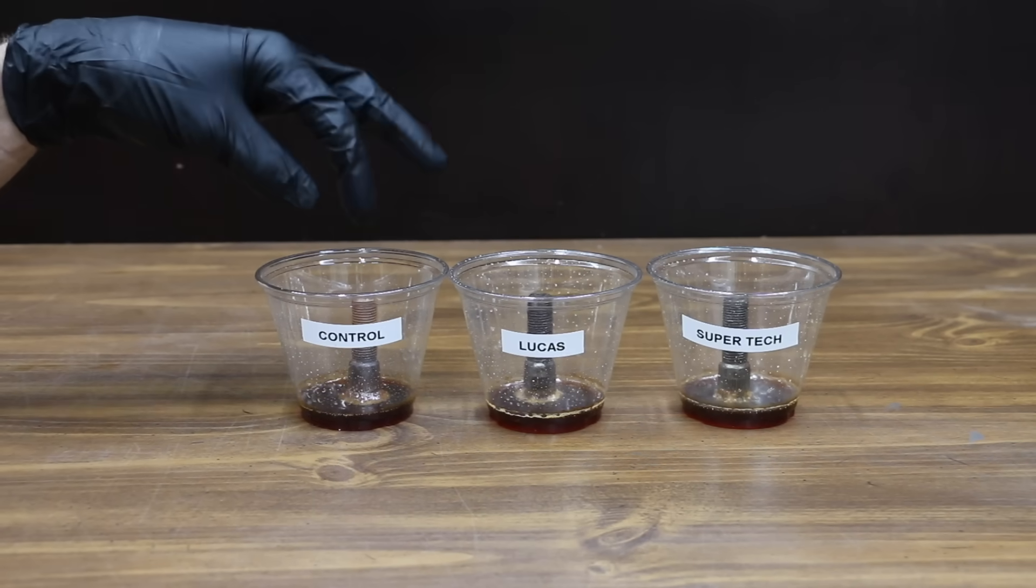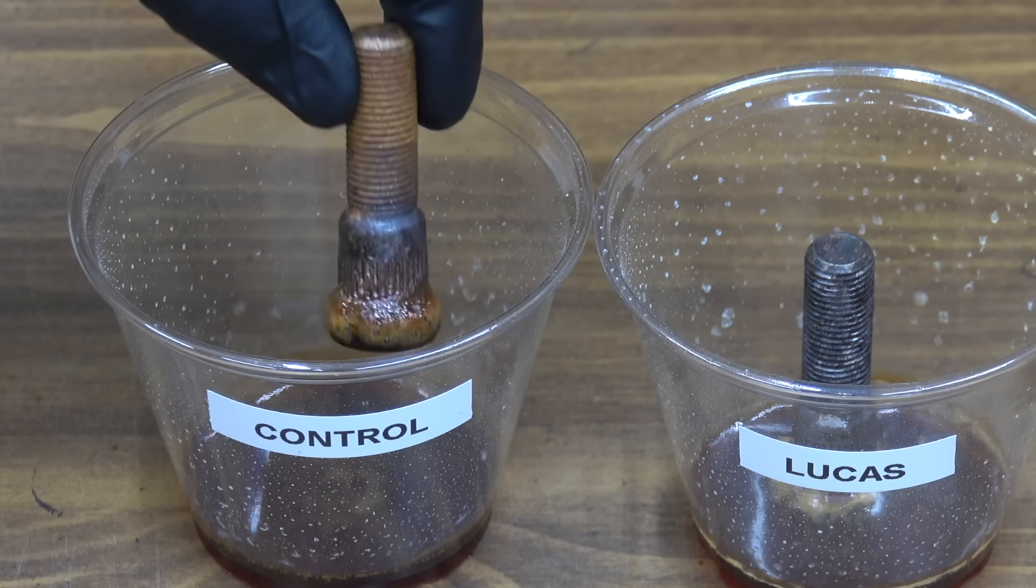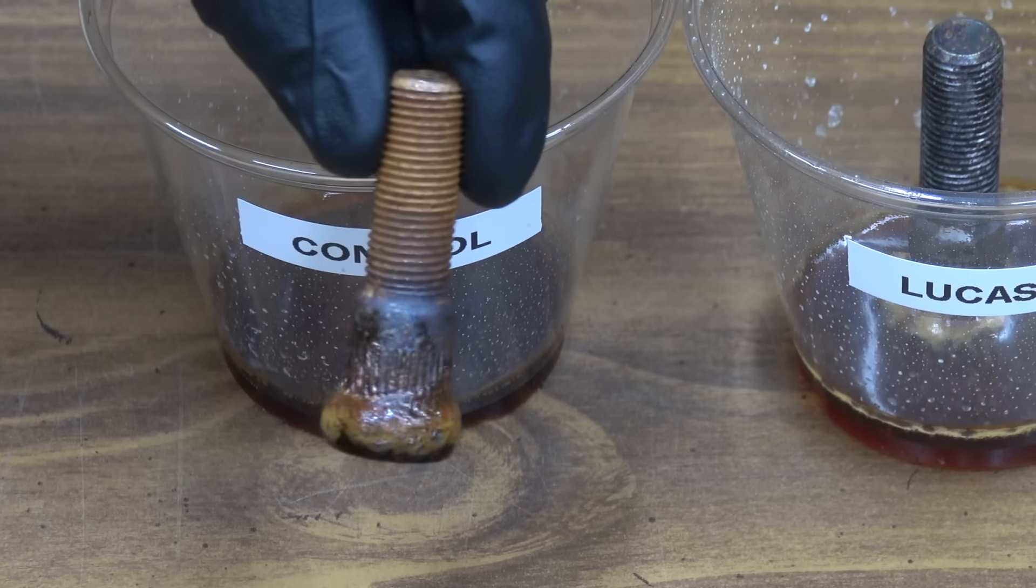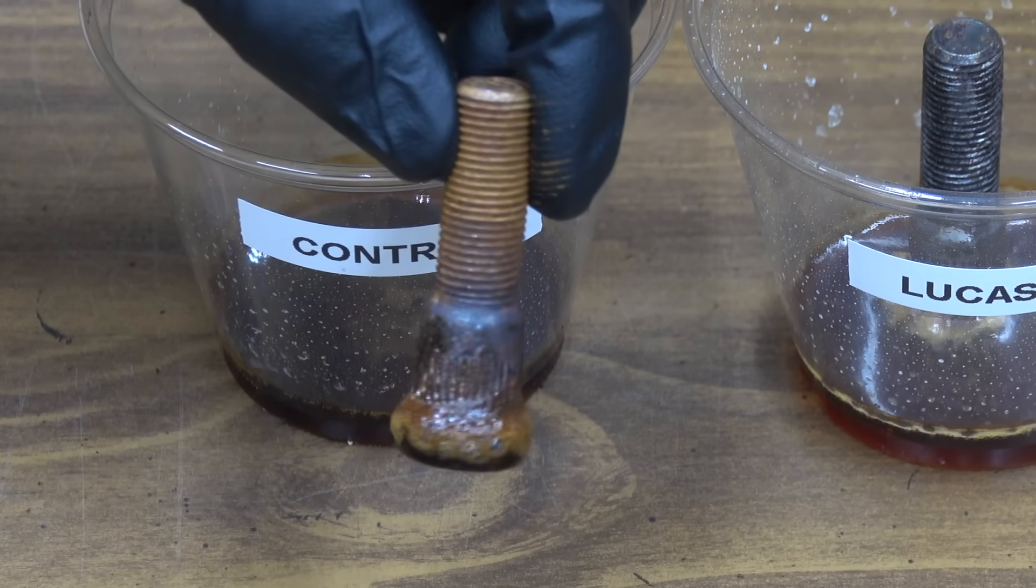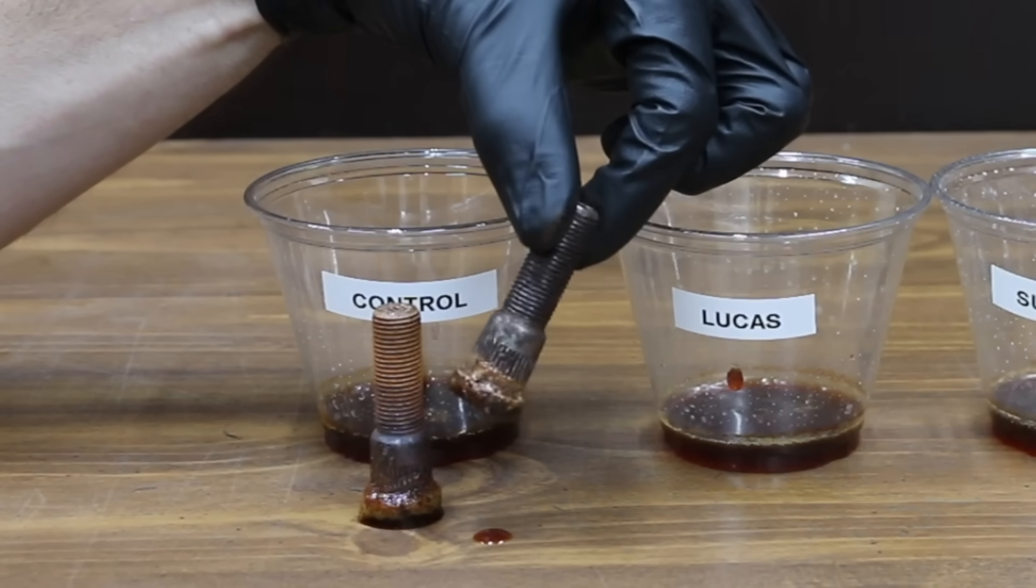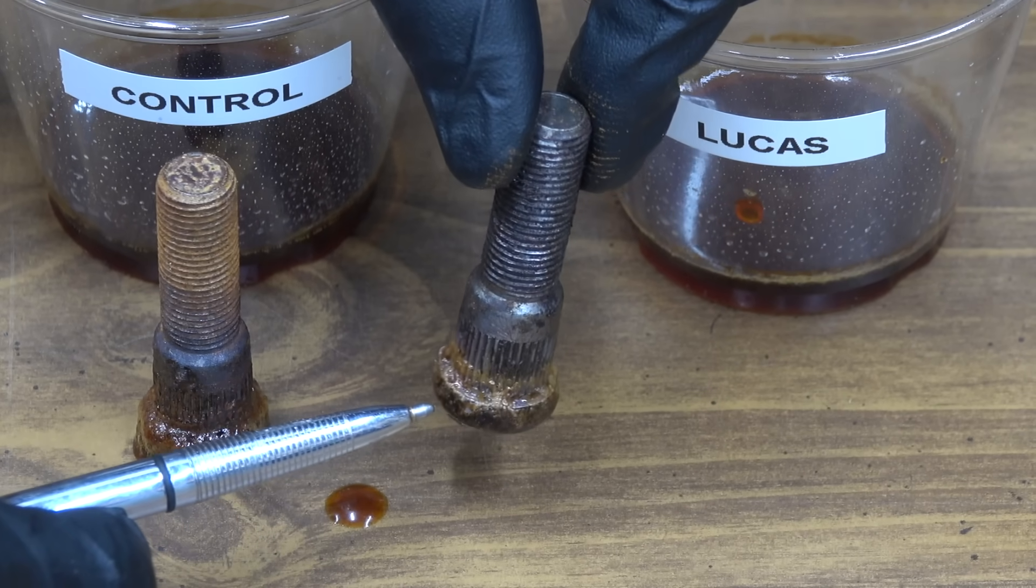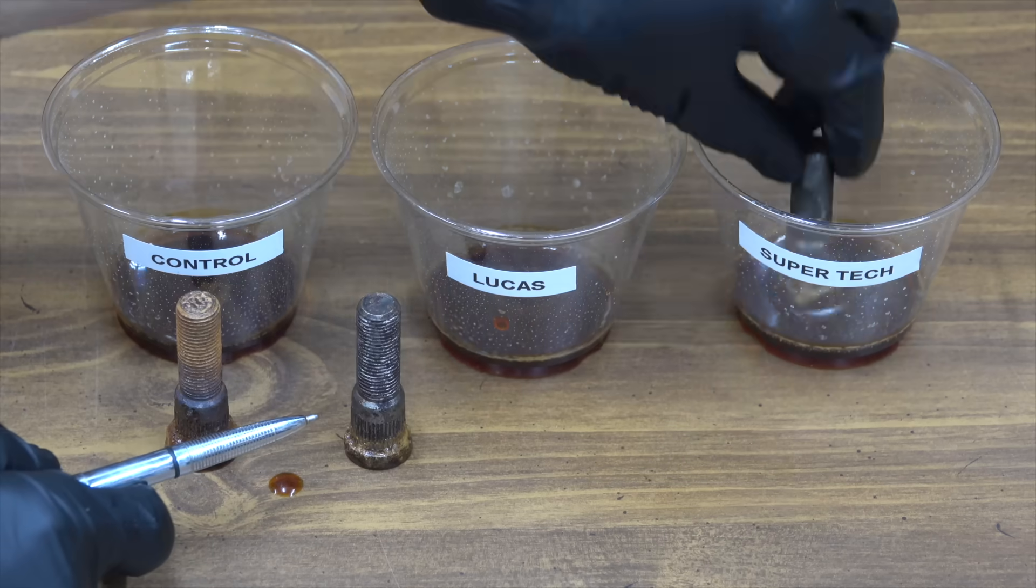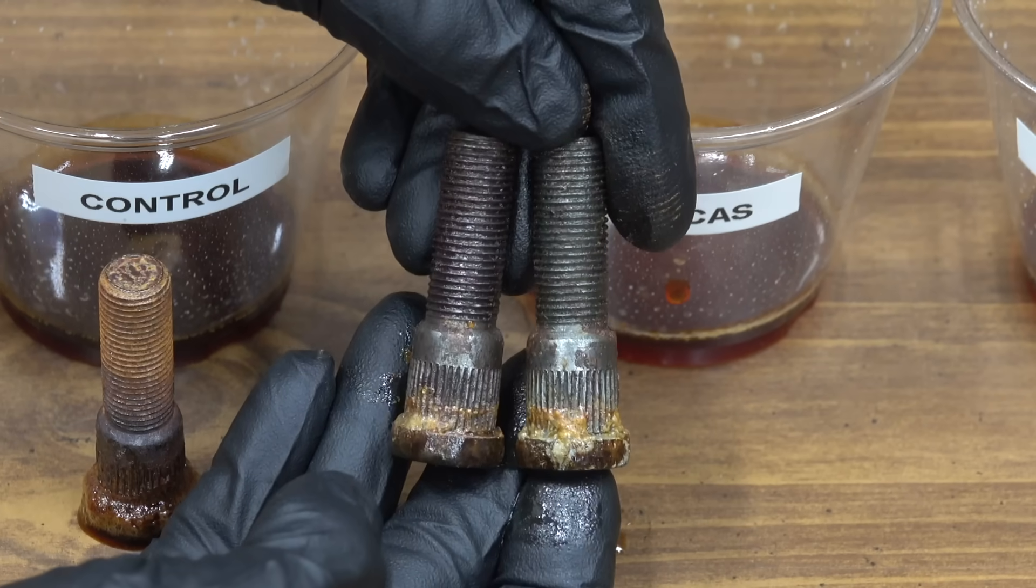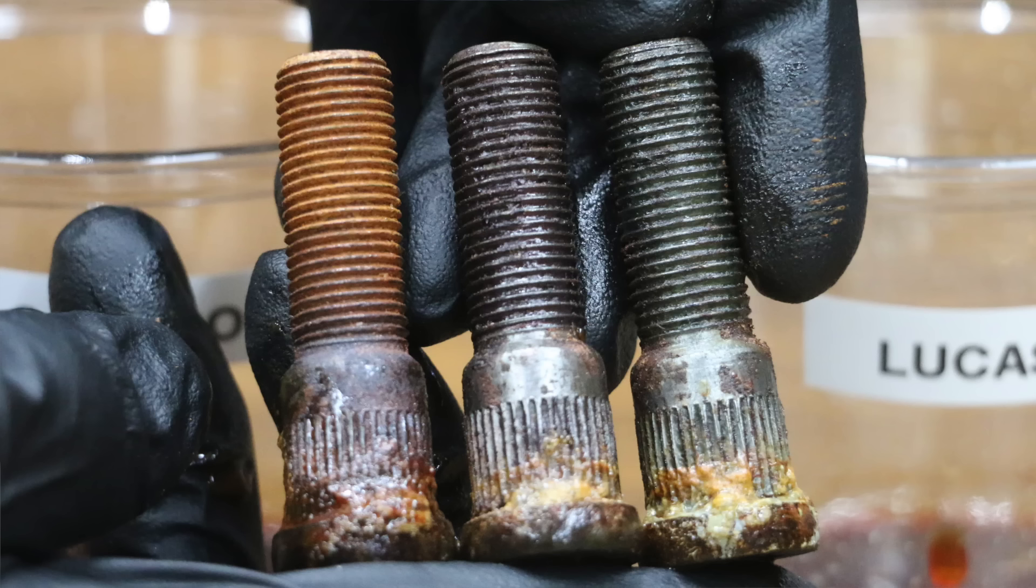It's been about 24 hours so let's go ahead and take a look at each one of these wheel stud lugs to see how much corrosion has taken place. Our control looks terrible. There's a lot of corrosion that has occurred in 24 hours. Obviously there's some corrosion especially around the lower part of the wheel stud lug where the bolt was coming in contact with the liquid. The amount of corrosion between Supertech and Lucas is very close. Both products did a very good job at preventing corrosion compared to the control.